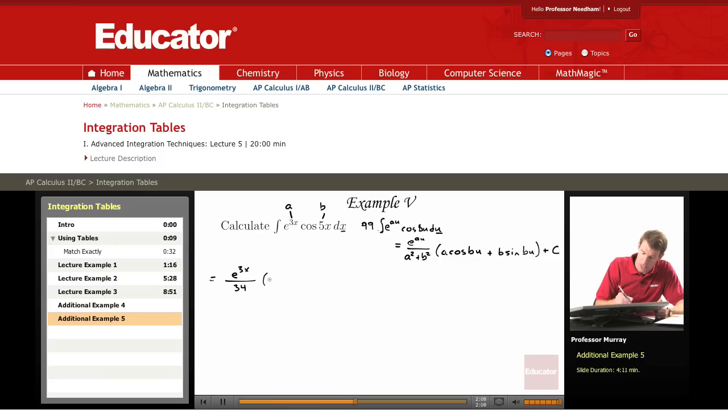a is 3, so 3 cosine, b is 5, 5x plus b is 5, 5 sine 5x plus a constant.